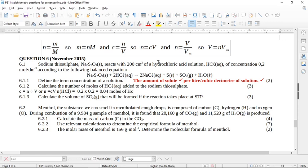There's my final answer: 0.04 moles of HCl. Now it says to calculate the volume of sulfur dioxide that will be formed if the reaction takes place at STP.